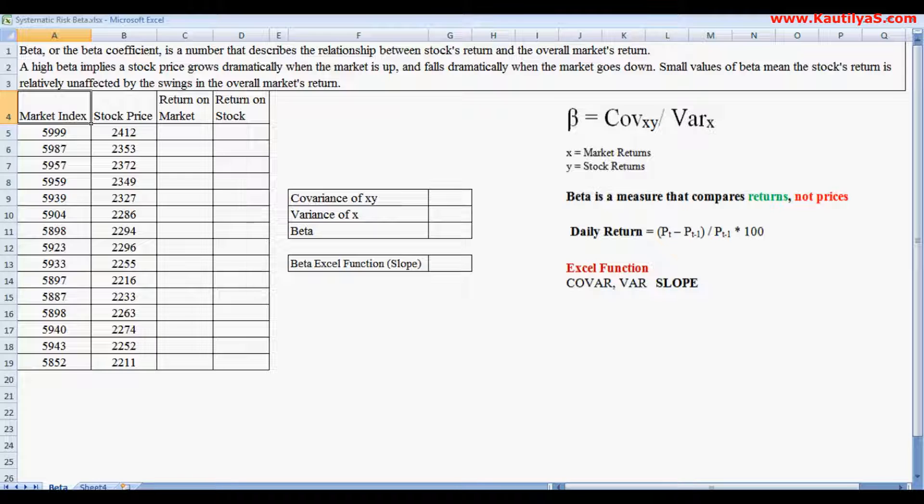The beta coefficient is a number that describes the relationship between stock's return and the overall market return.